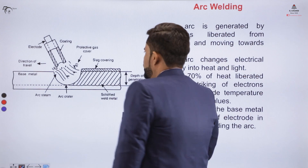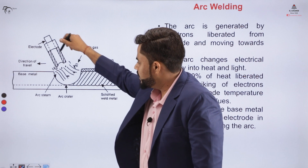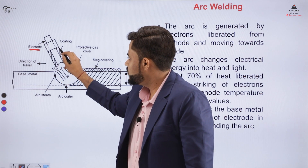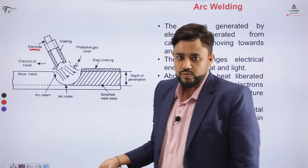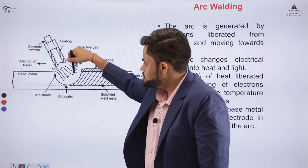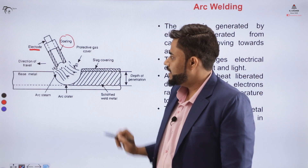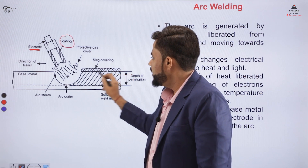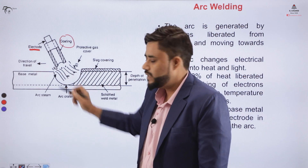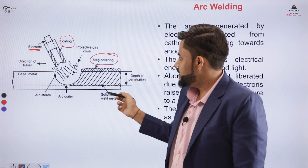Coming to the electron transference — when electrons transfer from the electrode to the workpiece, the electrode has a coating on its surface. Because of the flow of electrons, heat is produced, and that heat causes the coating to react and form a layer of slag over the base metal. A liquid surface is formed, the base metal melts, and the slag layer rises to the surface of the base metal.